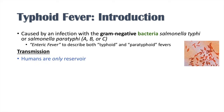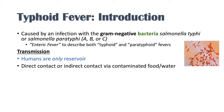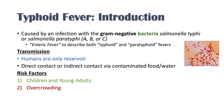How is typhoid fever transmitted? Humans are actually the only reservoir for this bacteria, so it has to come from a human to another human — either through direct contact or indirect contact via contaminated food or water. Risk factors for contracting typhoid fever include being a child or young adult, overcrowding, and poor sanitation, since contaminated food and water make transmission easier.